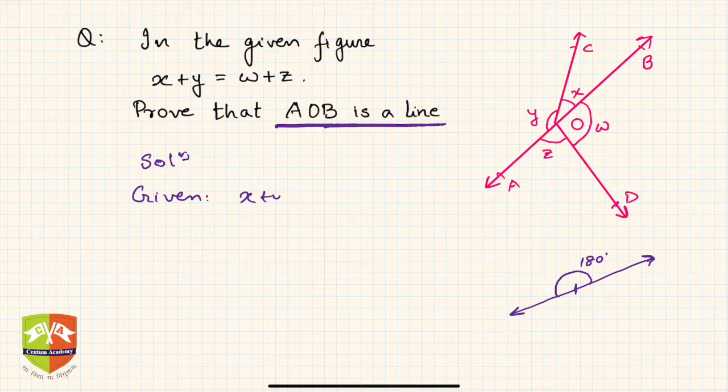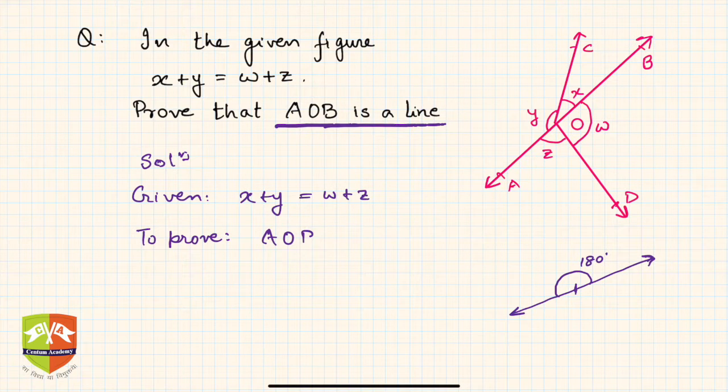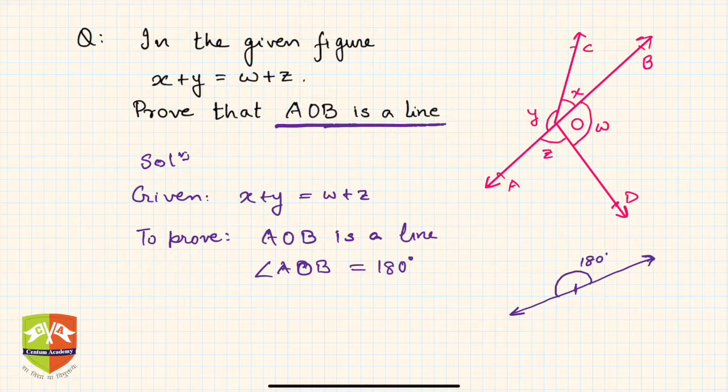Given: x plus y equals w plus z. To prove: AOB is a line, or angle AOB equals 180 degrees. This is what you have to prove. How to prove it?